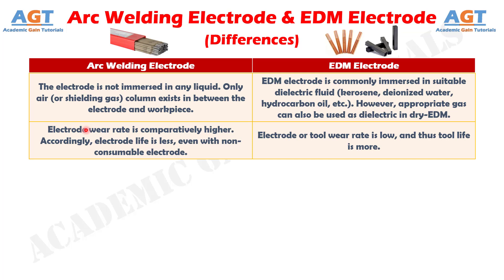Number 6: arc welding electrode wear rate is comparatively higher, and accordingly electrode life is less, even with non-consumable electrode, whereas electric discharge machining electrode or tool wear rate is low, and thus tool life is more.